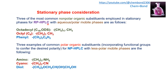Stationary phases differ between reverse phase and normal phase HPLC. In reverse phase HPLC, a non-polar organic substituent is used as the stationary phase — including octadecyl (C18), octyl (C8), and phenyl — with a polar mobile phase. In normal phase HPLC, a polar organic stationary phase is used — including amino, cyano, and diol — along with a less polar or non-polar mobile phase.